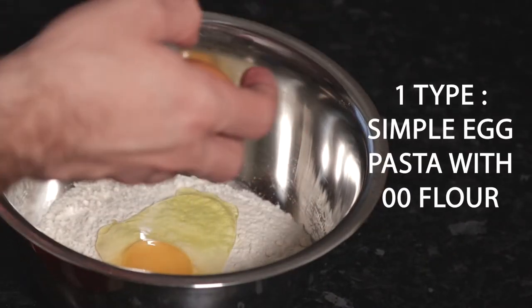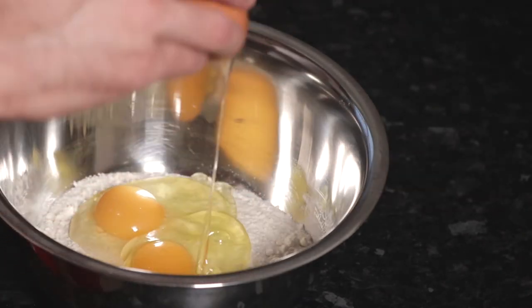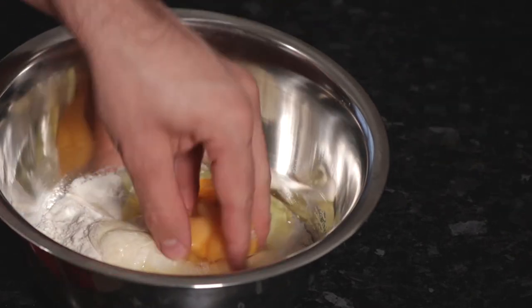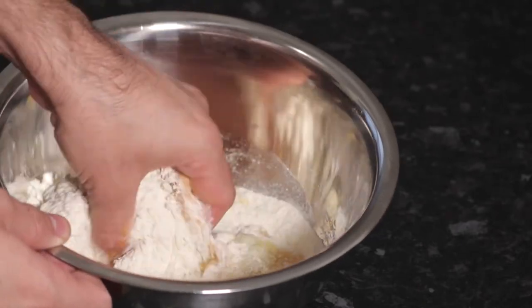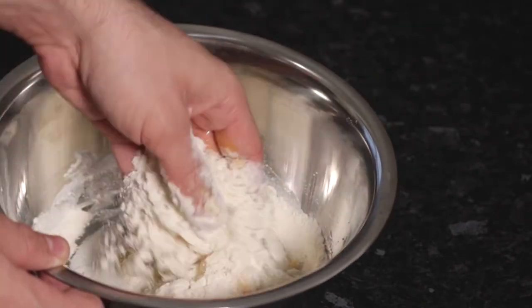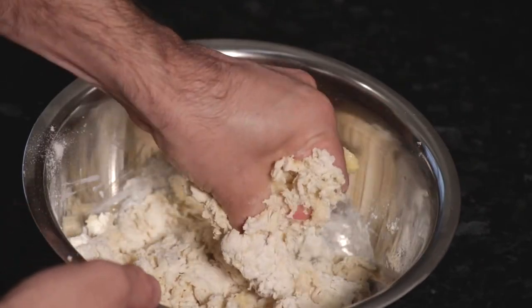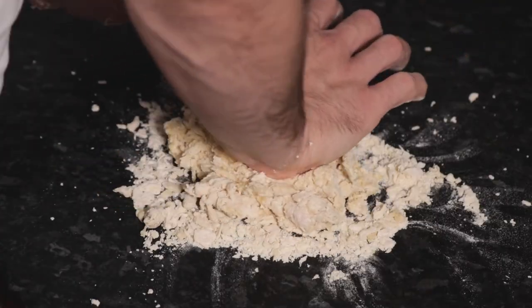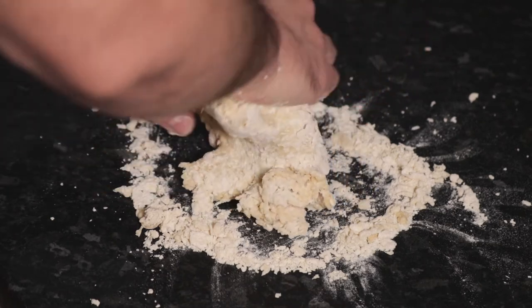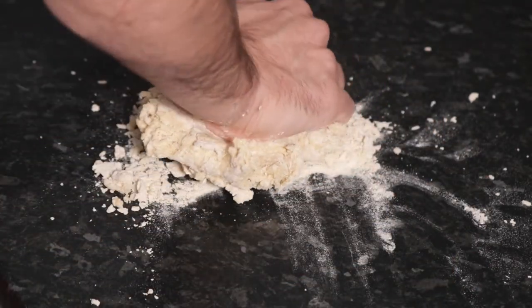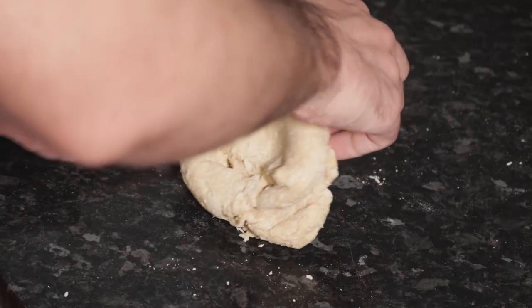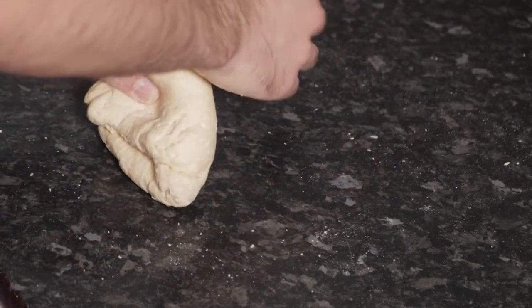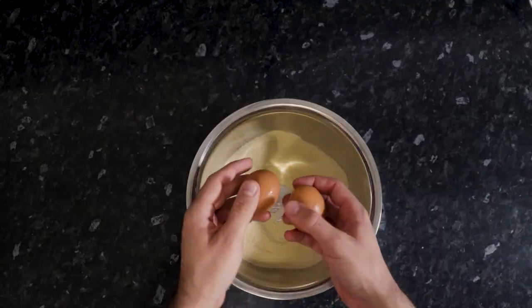We're gonna start with the first way: simple egg pasta dough with 00 flour. You can use plain flour instead. We're gonna use for every 100 grams of flour one whole egg. For about 200 grams of flour and two eggs, you're gonna make three portions. Mix all ingredients in the bowl then transfer to a surface. You can do this by hand or with a stand mixer. Work your dough until all ingredients are well incorporated, then wrap it and store in the fridge for about one hour so the gluten can relax.